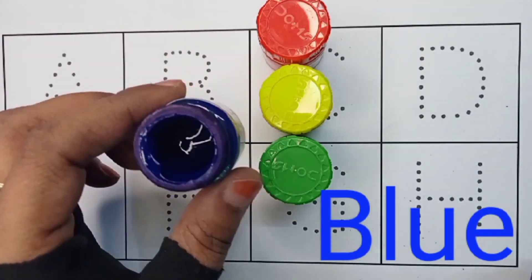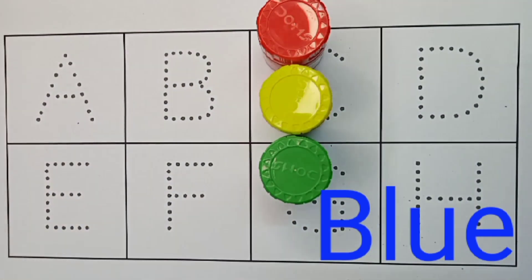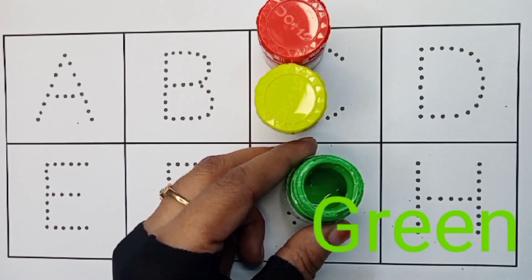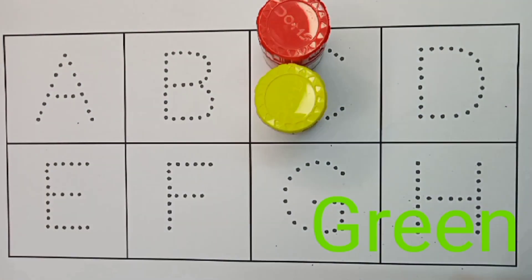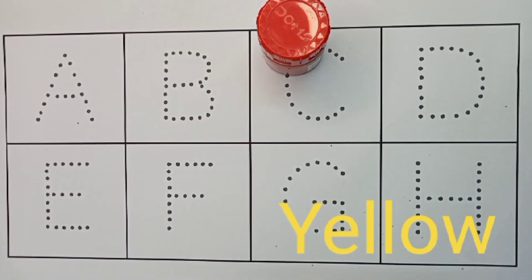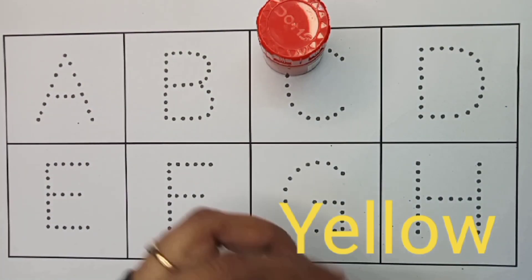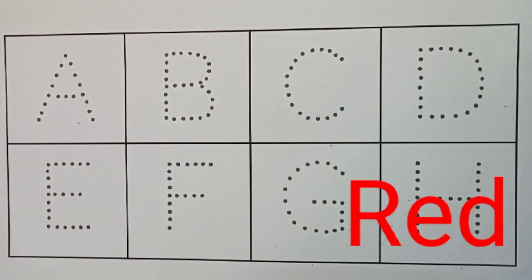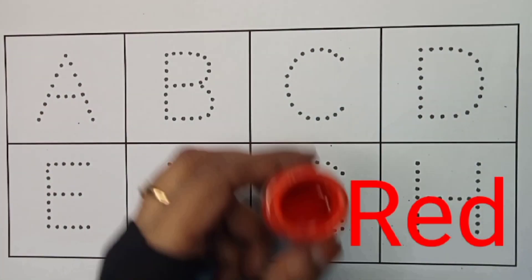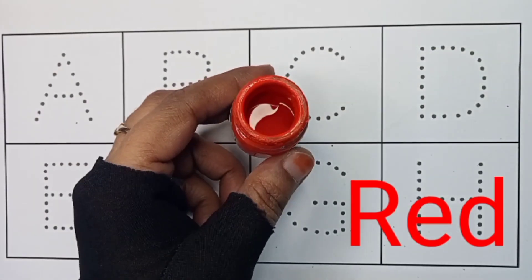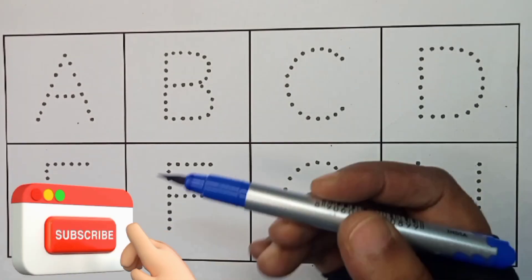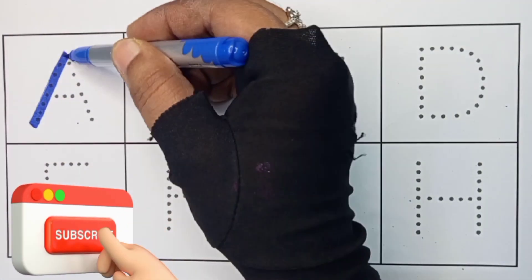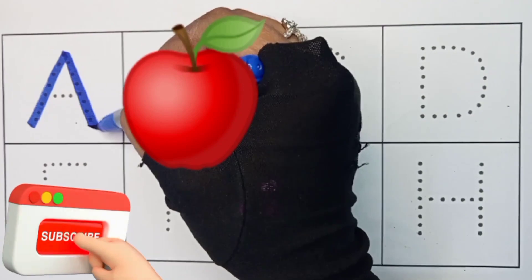Blue color. Green color. Yellow color. Red color. Blue color. A. A for apple.